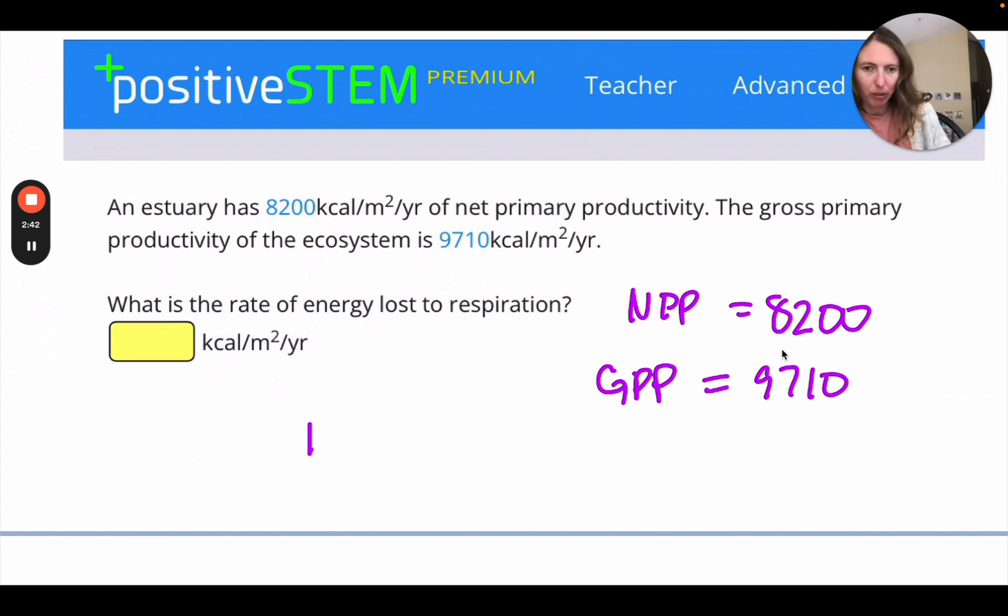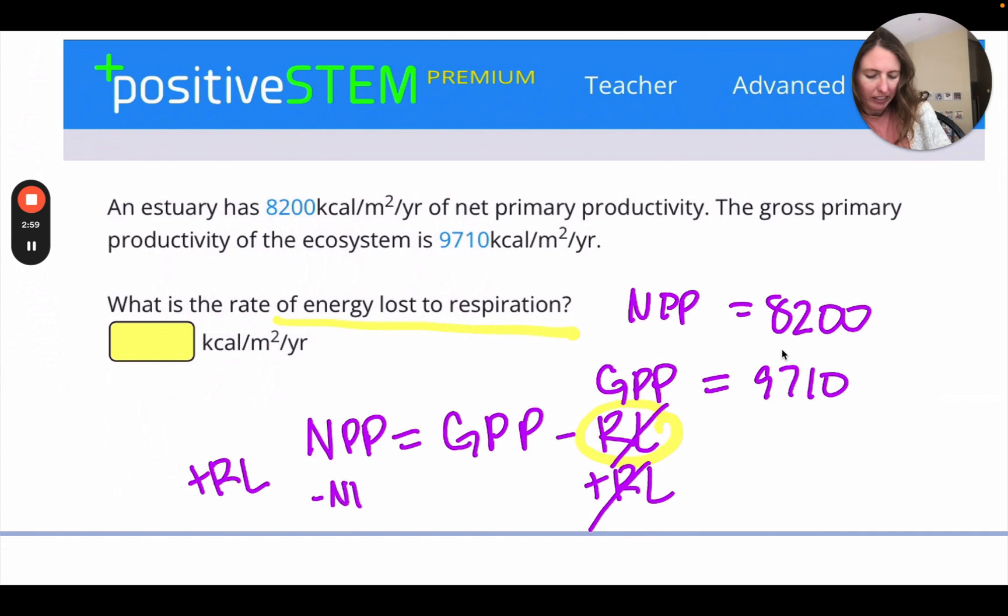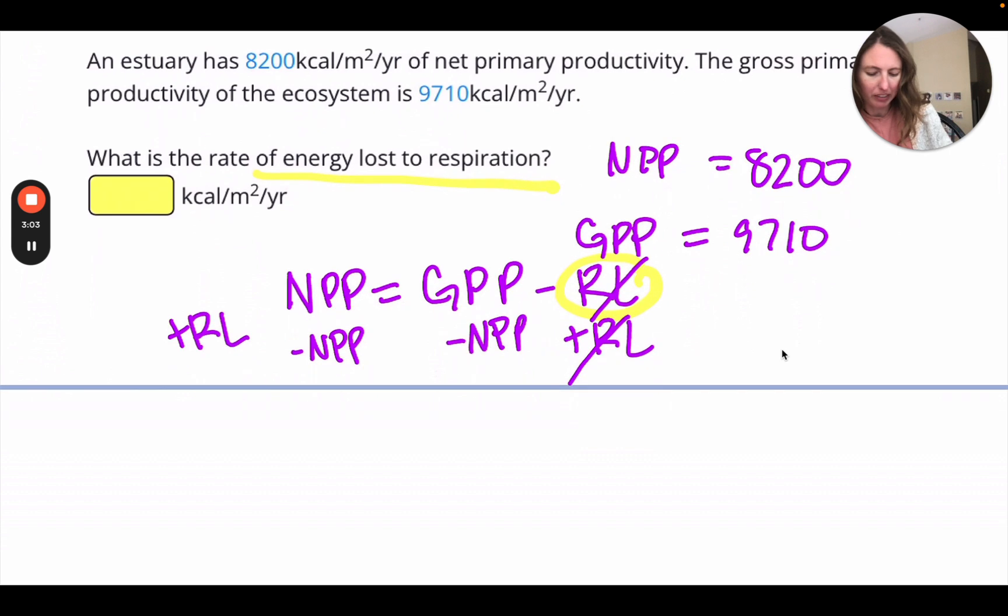So we're going to write down this formula again. And if I'm trying to solve for RL, the energy loss to respiration, I can add it to both sides of the equation to cancel it out over here, and then subtract that net primary productivity to the other side. So I'll have here my loss, respiration loss, is the gross primary productivity minus the net primary productivity.